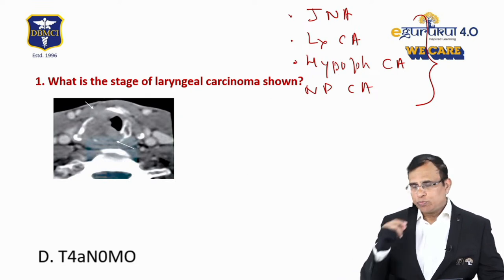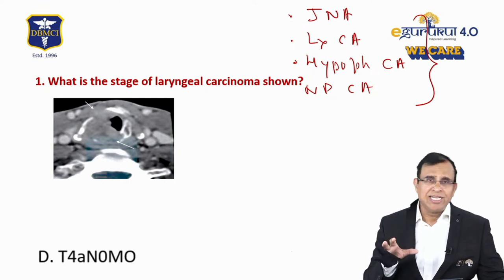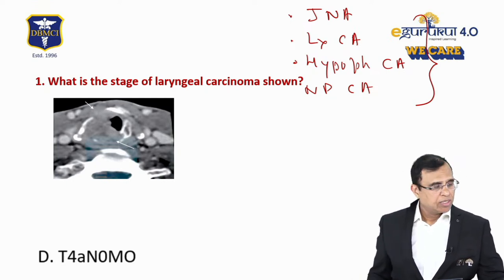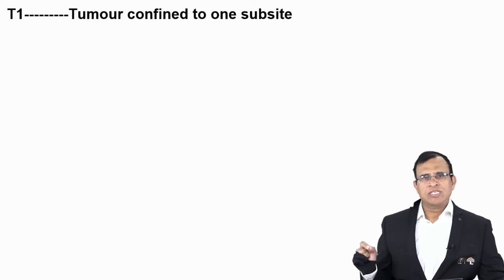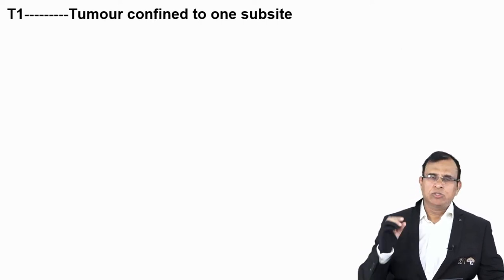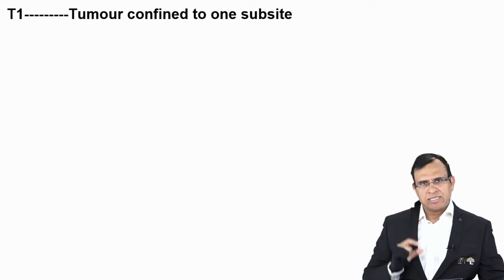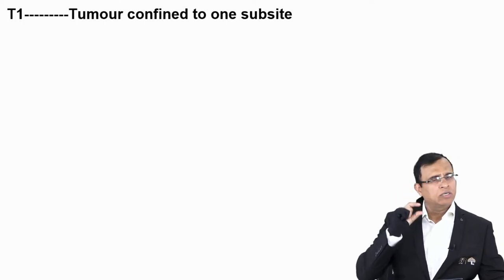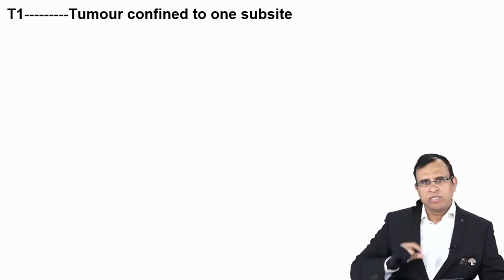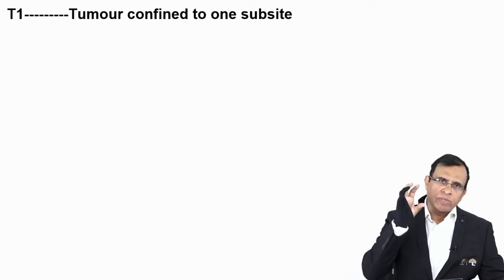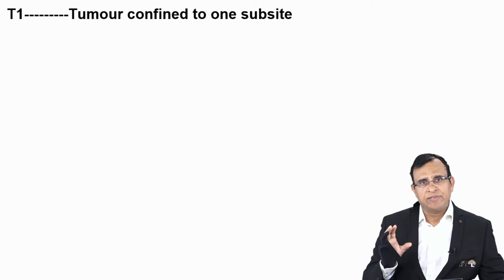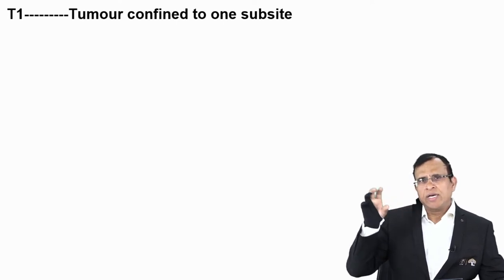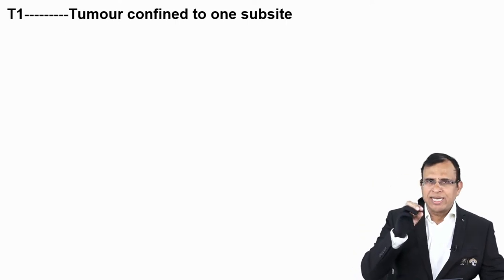Laryngeal carcinoma staging is actually easy. T1 means the tumor is confined to one subsite — the larynx has subsites: supraglottis, glottis, and subglottis. If the tumor is confined to only supraglottis, or only glottis, or only subglottis, it is T1. Supraglottis is further divided into subtypes.